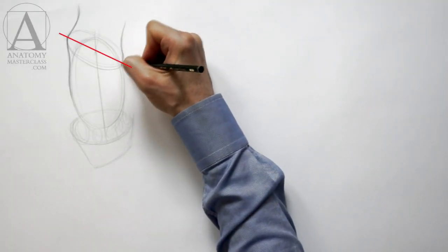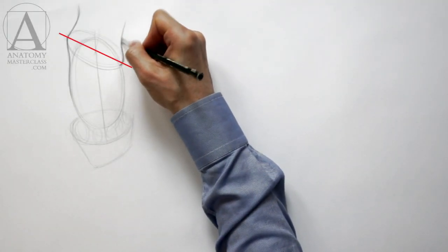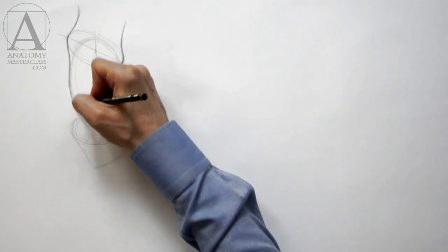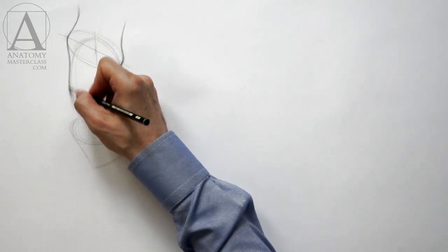The main axis of the top oval is tilted diagonally. This is because the inner ankle bone is located higher than the outer one.